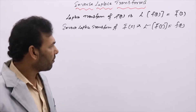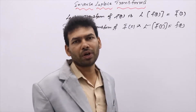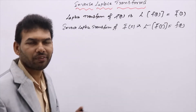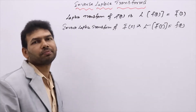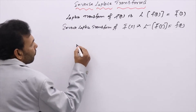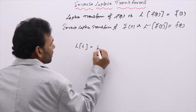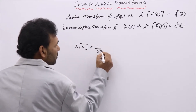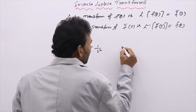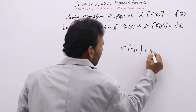So whatever we did until now, we are going to do the quite opposite — in inverse manner. For example, you know Laplace transform of t is 1 by s square. In inverse, L inverse of 1 by s square is t. Quite opposite.